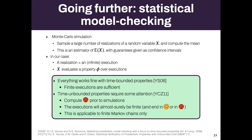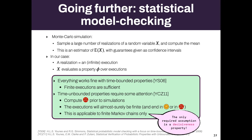For time-bounded properties, the execution will almost surely be finite and end in either a good state or the trap — this precisely coincides with decisiveness. The conclusion is that statistical model checking applies to any decisive Markov chain, not only to finite Markov chains, because the only assumption needed is that the decisiveness property is satisfied.